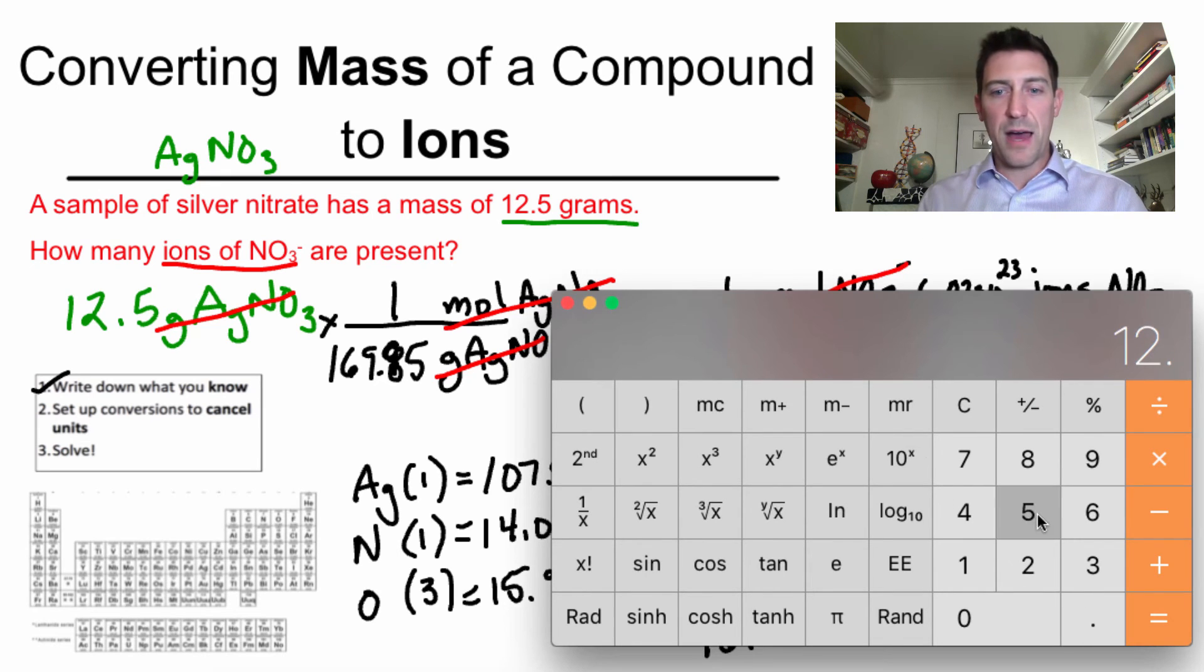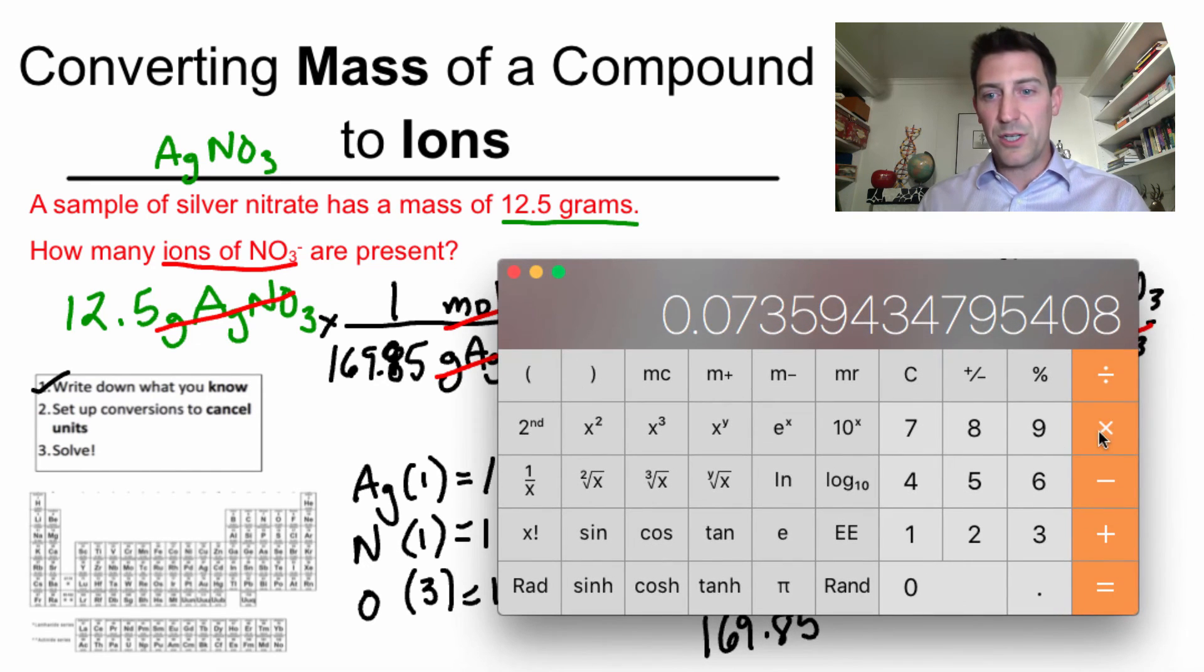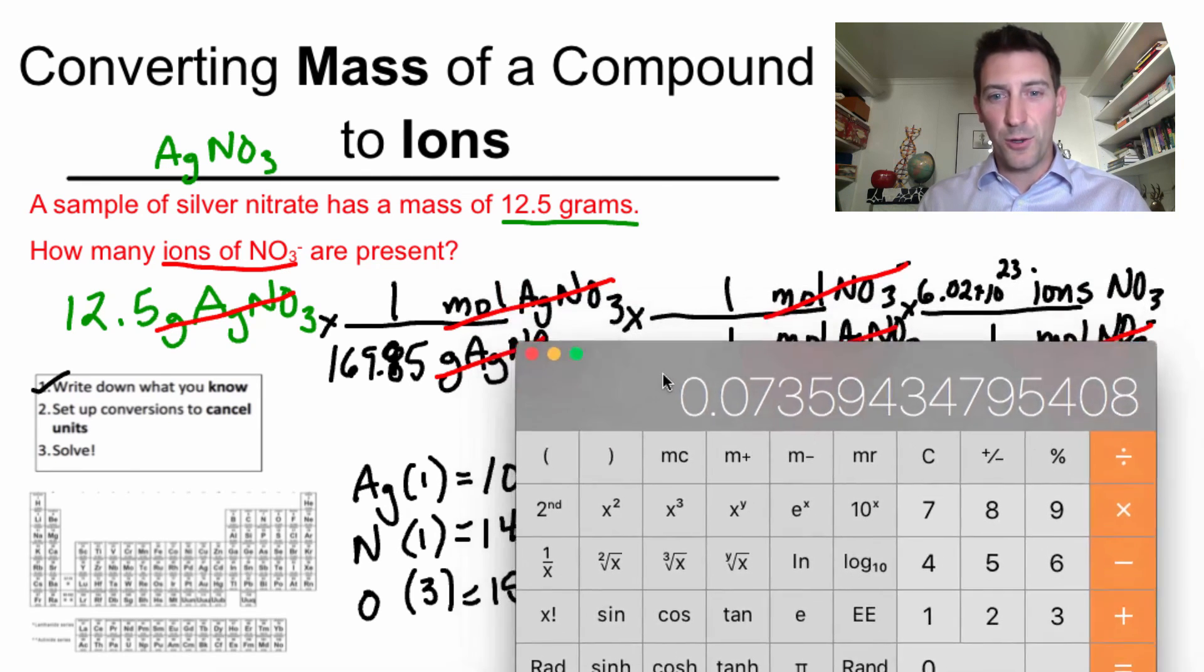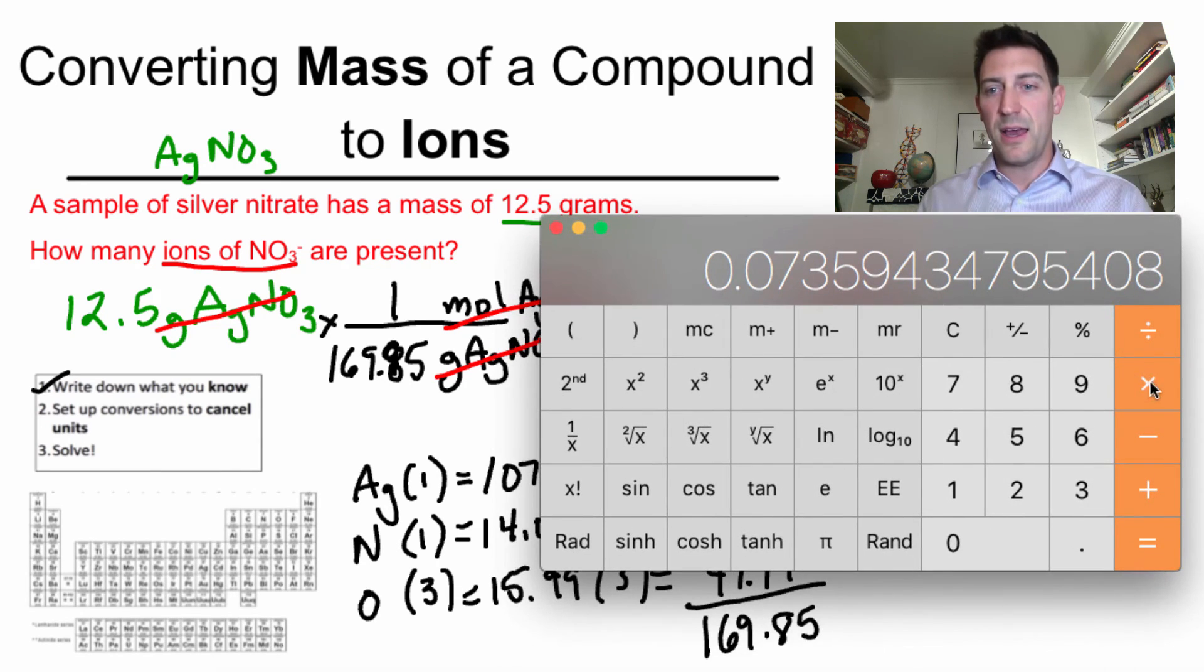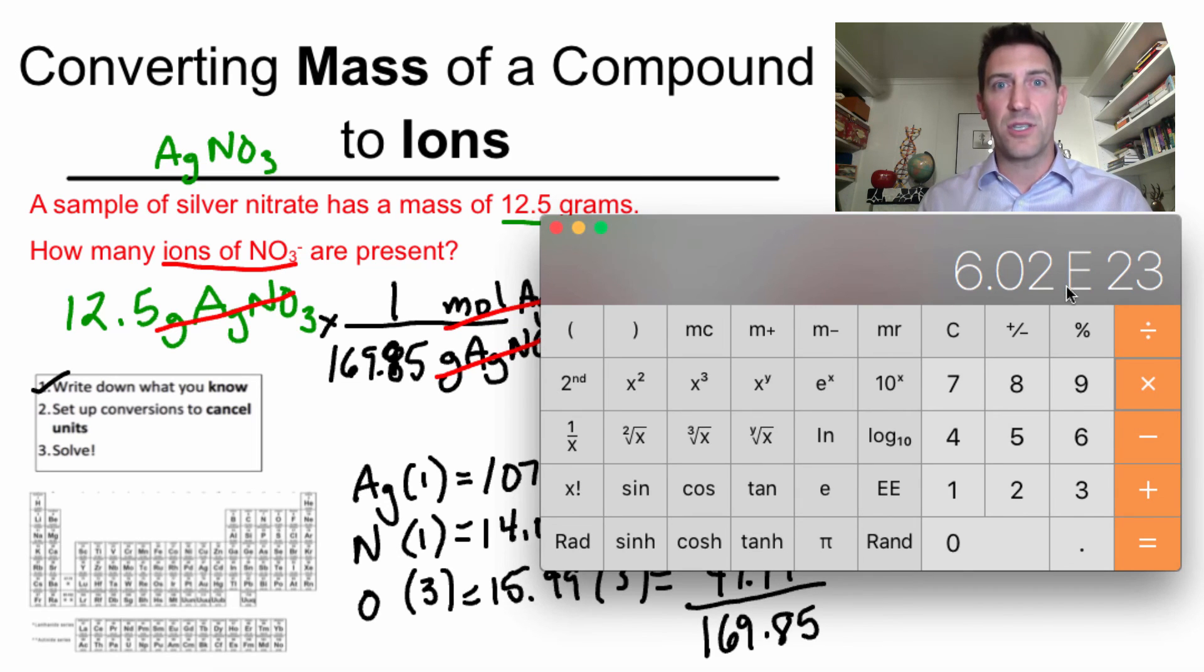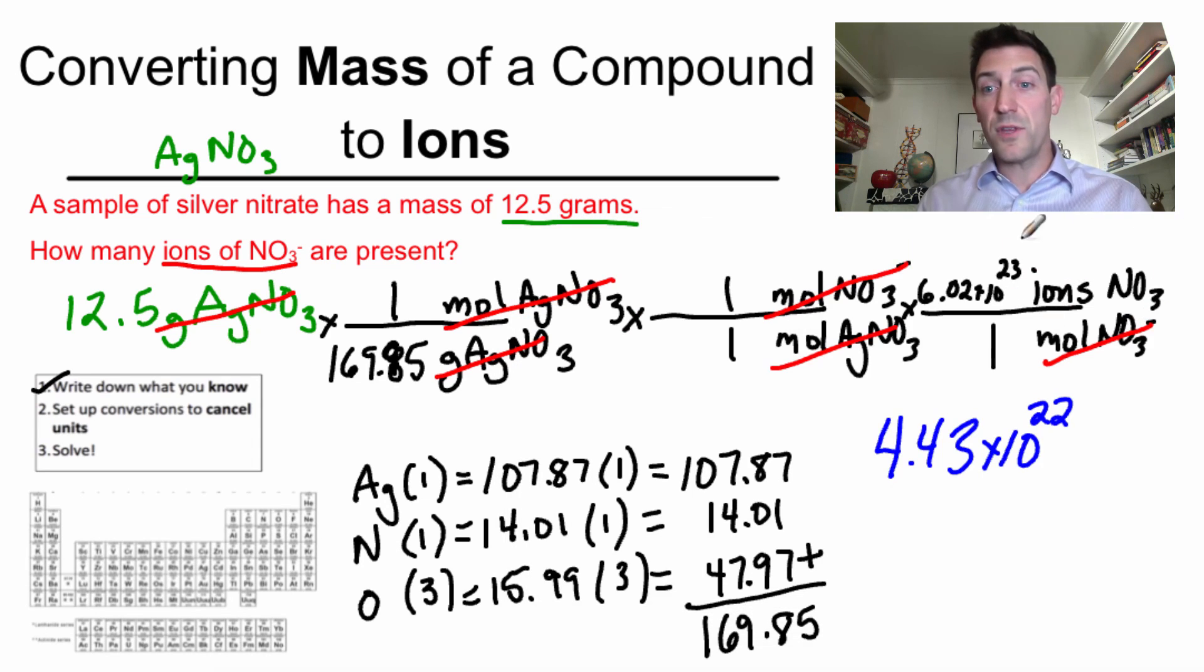Enter 12.5 times 1, but I don't need to do that. So I'll go straight to divided by 169.85. I'm going to hit enter just so my calculator can keep track. The next step here is to take all of that times 1 divided by 1, which I don't need to do, but I'm going to do it just to show you we end up with the same thing. The next step over here is 6.02 times 10 to the 23rd. So I need to multiply by that. I hit times 6.02 EE 23. That EE means times 10 to the, I hit the enter button and look, 4.43 EE, 4.43 times 10 to the 22. The units for this, the only thing I have left are ions of nitrate. Perfect.